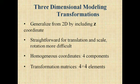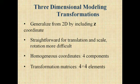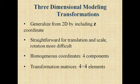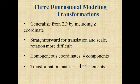3 dimensional modeling transformations. We can generate or extend from 2D by adding the Z coordinate values. Straightforward for translation and scale and rotation, it is more difficult. Homogeneous coordinates, 4 components we needed. And transformation matrices. Earlier we have 2D, now it is 3D. So we need 4 cross 4 elements for generating 3D modeling.